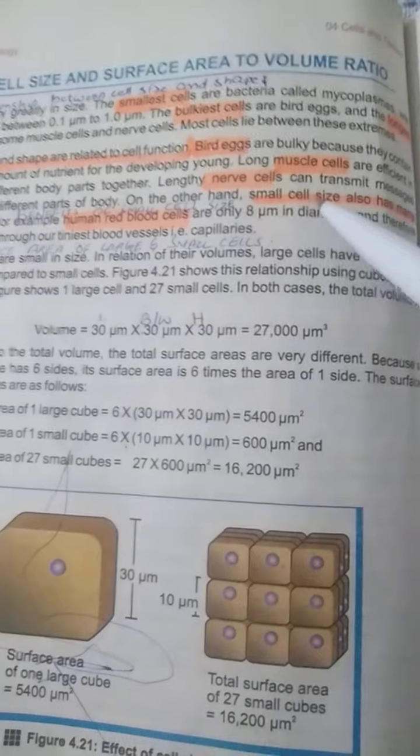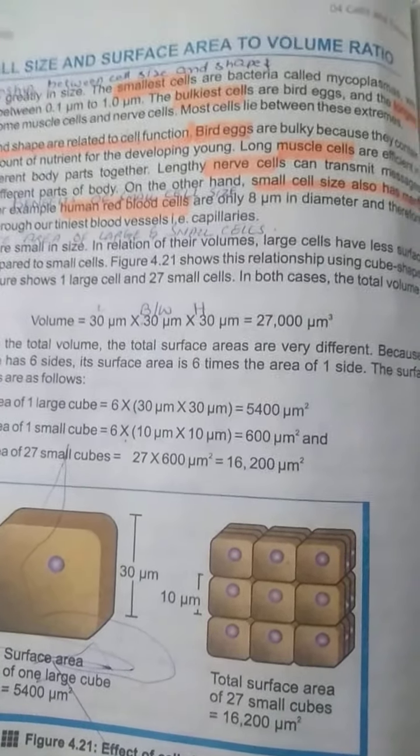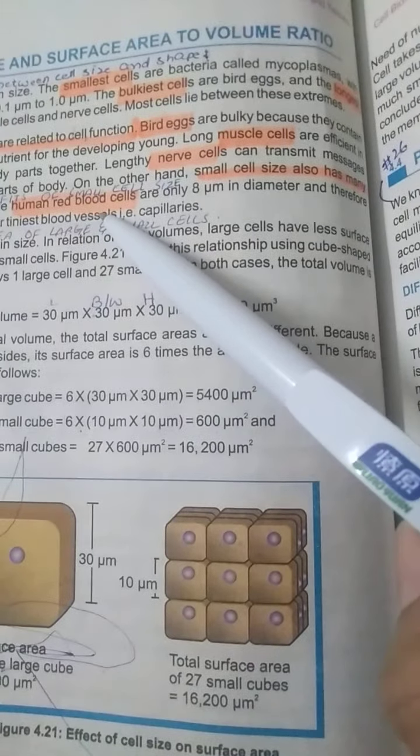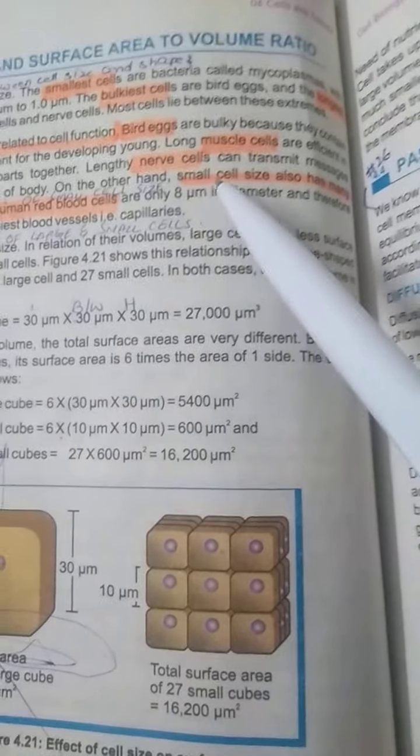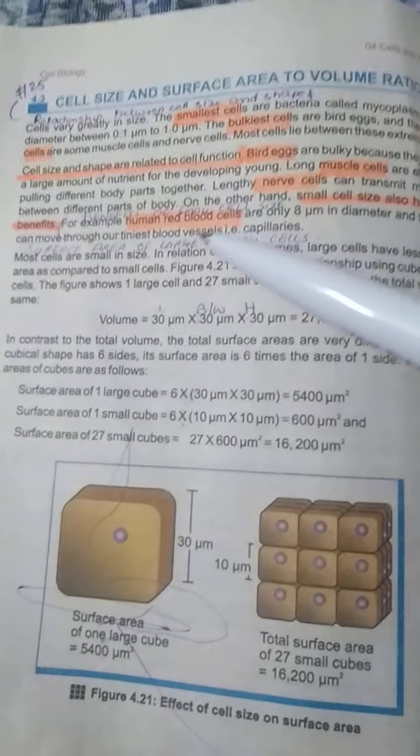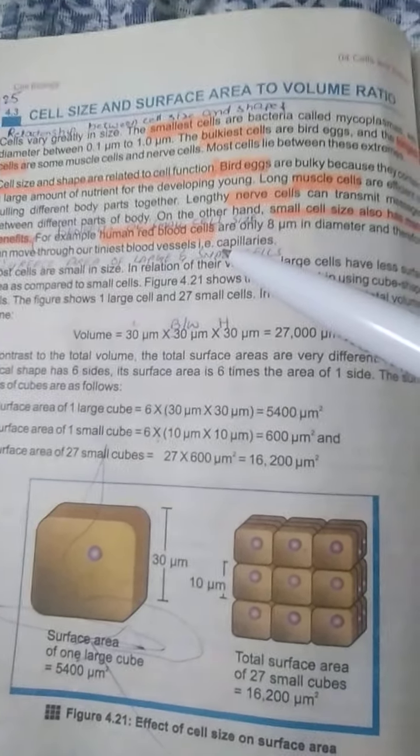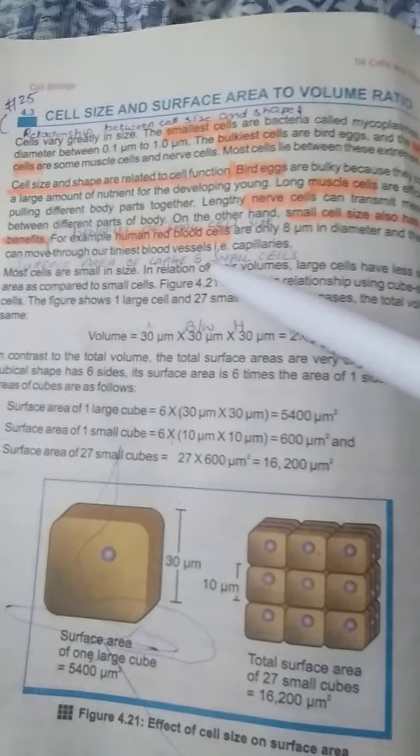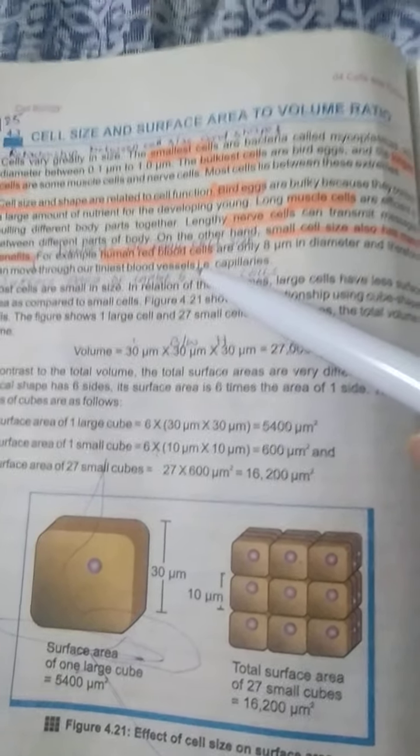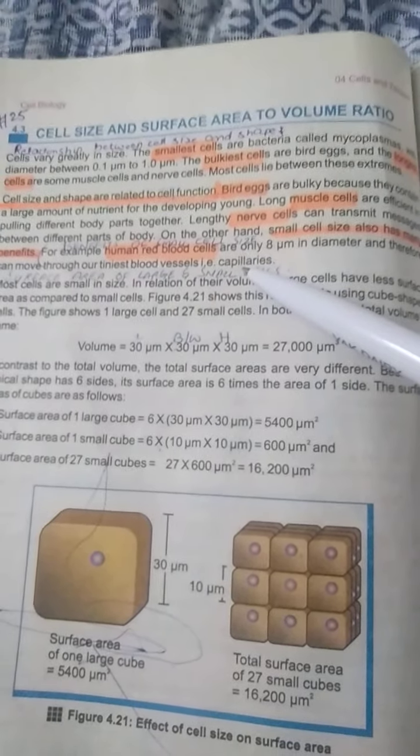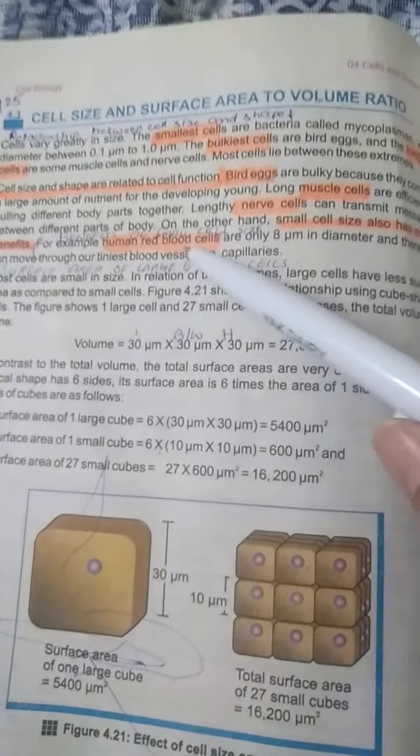On the other hand, small cell size also has many benefits. How is it beneficial? We take the example of red blood cells. You already know red blood cells or RBCs. They are only 8 micrometer in diameter, their size is 8 micrometer. Therefore, they can move through our tiniest blood vessels that are capillaries. Our red blood cells can easily pass through our blood vessels. We have three types of blood vessels: arteries, veins, and capillaries. The capillaries are the smallest and tiniest blood vessels, and red blood cells can easily pass through them.